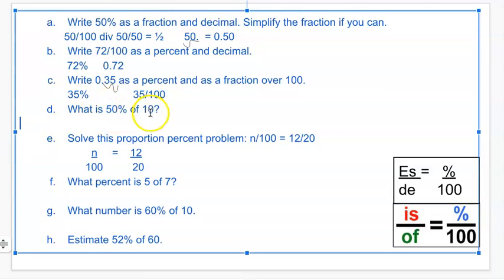What is 50% of 10? So in this equation, remember, of means multiply. So I'm going to put an X where the of is, and then multiply times 10.